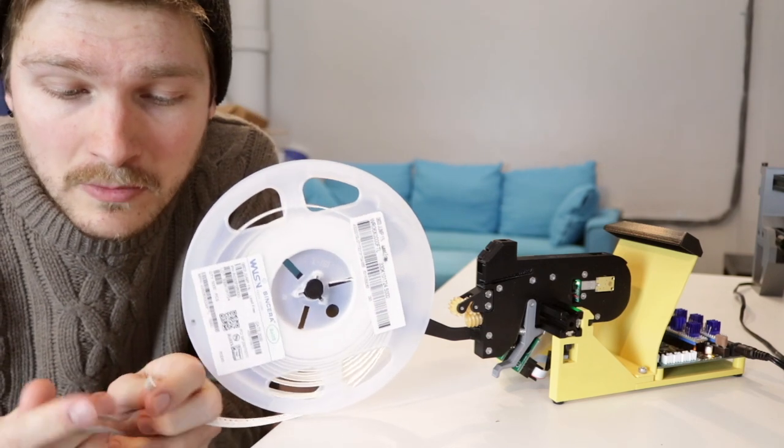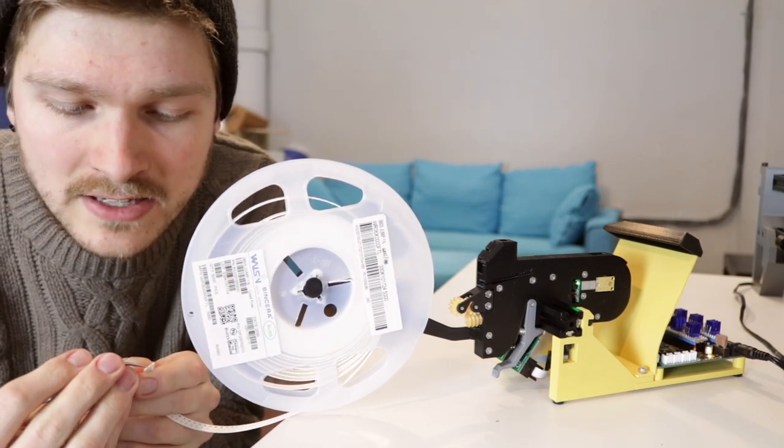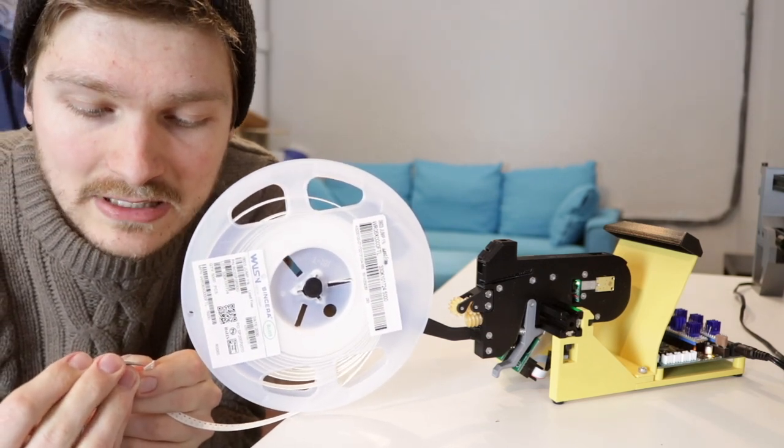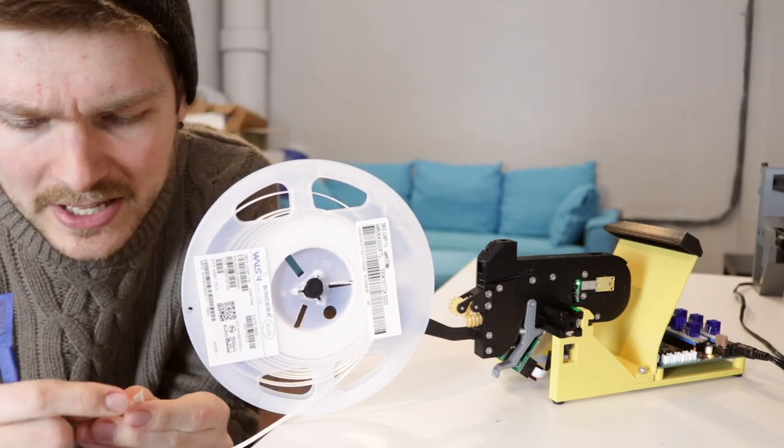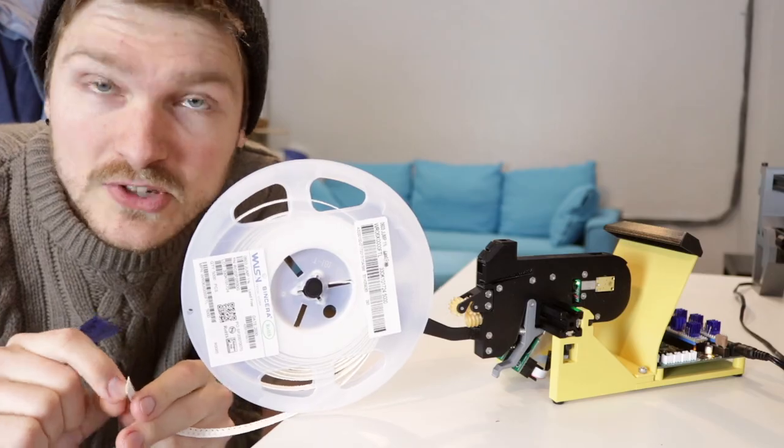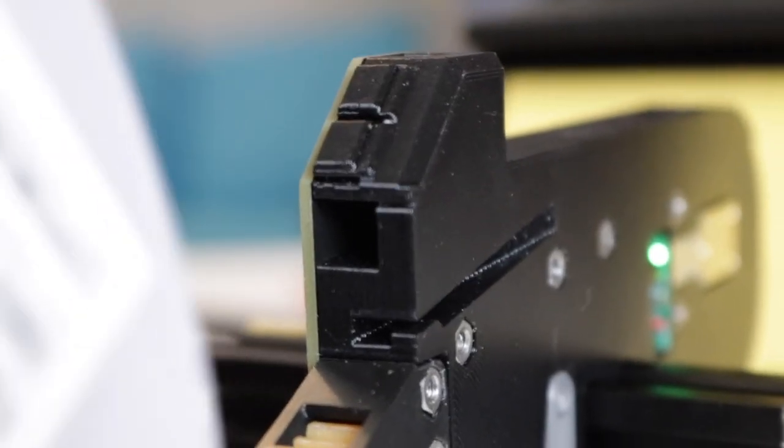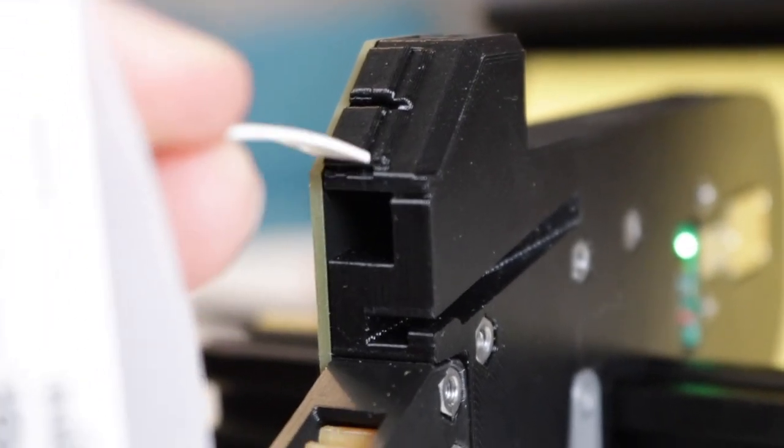So to prep the tape I'm just gonna peel back a little bit of the film on the end so that it's really easy for me to lead it back where it needs to go in the peel motor. I'm only gonna peel off a little bit of it, just a few components worth, just so it's easy to grab. Then I'm gonna feed it into the hole in the back of the feeder that accepts the tape.